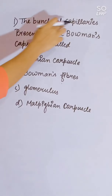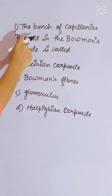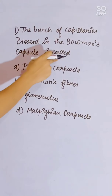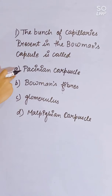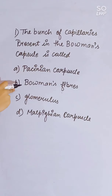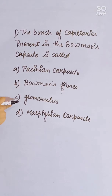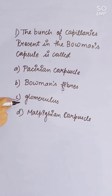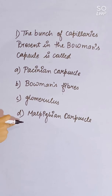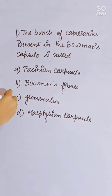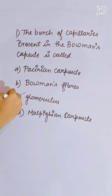The bunch of capillaries present in the Bowman's capsule is called: passing capsules, Bowman's fibres, glomerulus, or Malpighian corpuscle. Correct answer is glomerulus.